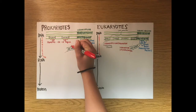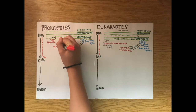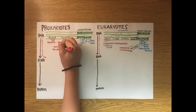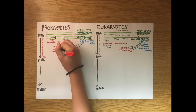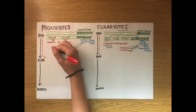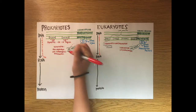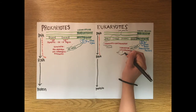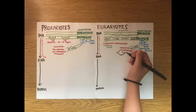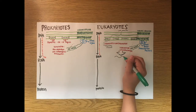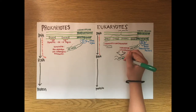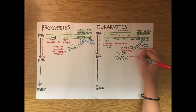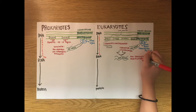Termination during transcription also differs between eukaryotes and prokaryotes. In eukaryotes, it's known as polyadenylation, while prokaryotes use Rho-independent and Rho-dependent terminators. I really recommend going back and understanding these to the full extent, but today we won't be covering them in detail.